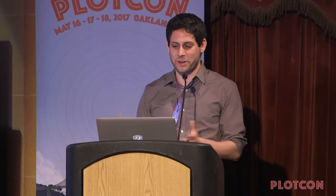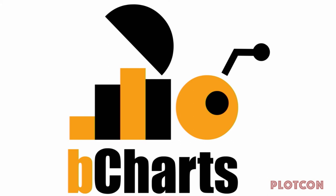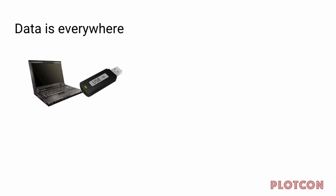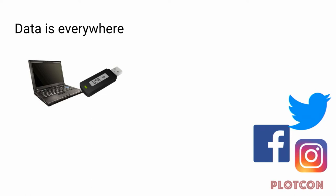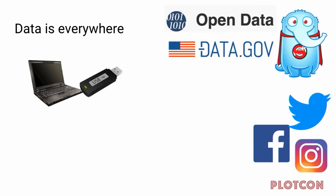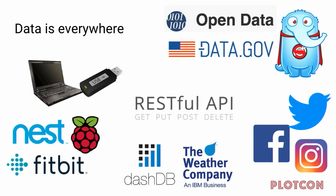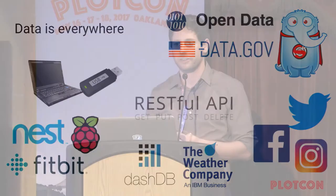Now we get to bCharts. bCharts is a pretty new prototype at IBM, and the idea is to make charting as simple as possible — with the real goal of being the simplest charting tool on the internet. One of the main concepts of bCharts is that data is everywhere: on your laptop, a USB key, social data like Facebook, Twitter, Instagram, open data like Socrata or government data, IoT data like Nest, Fitbit, Raspberry Pis, REST APIs, databases like IBM's Db2, or the Weather Company data. Data is everywhere.